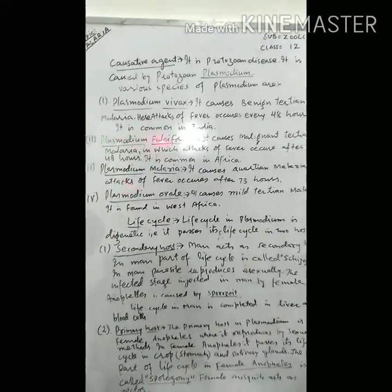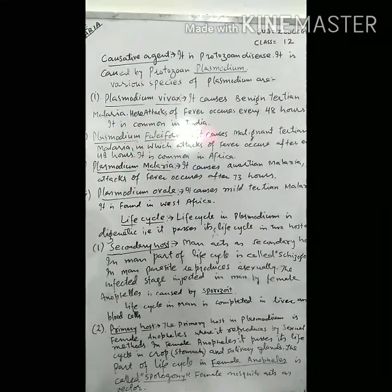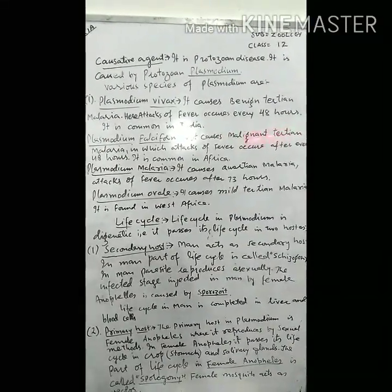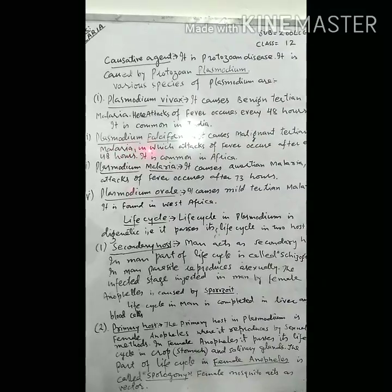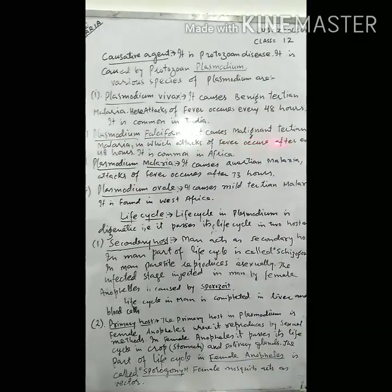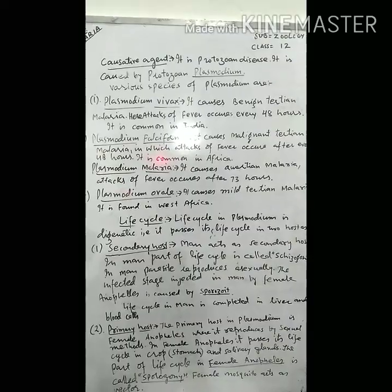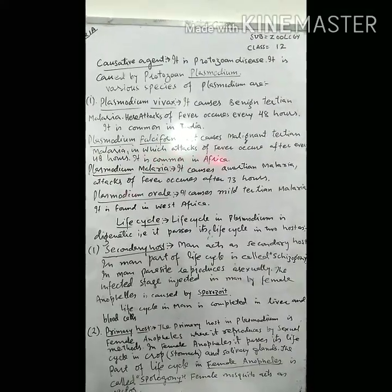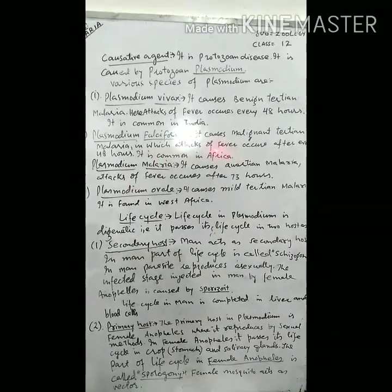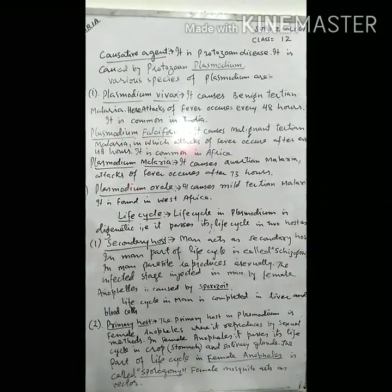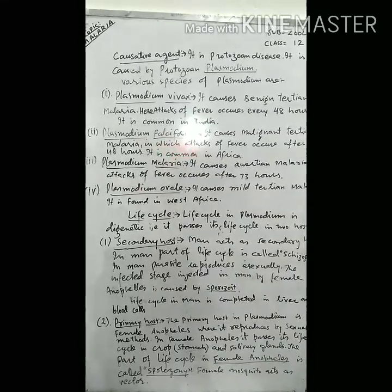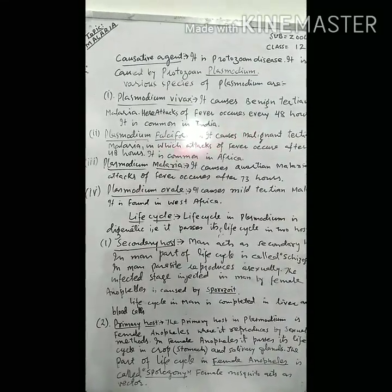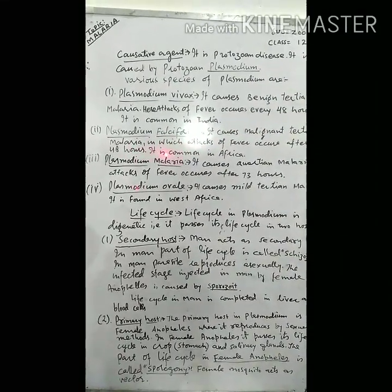The second species of plasmodium is plasmodium falciparum. It causes malignant tertian malaria, where attacks of fever occur after every 48 hours. This type is common in Africa.